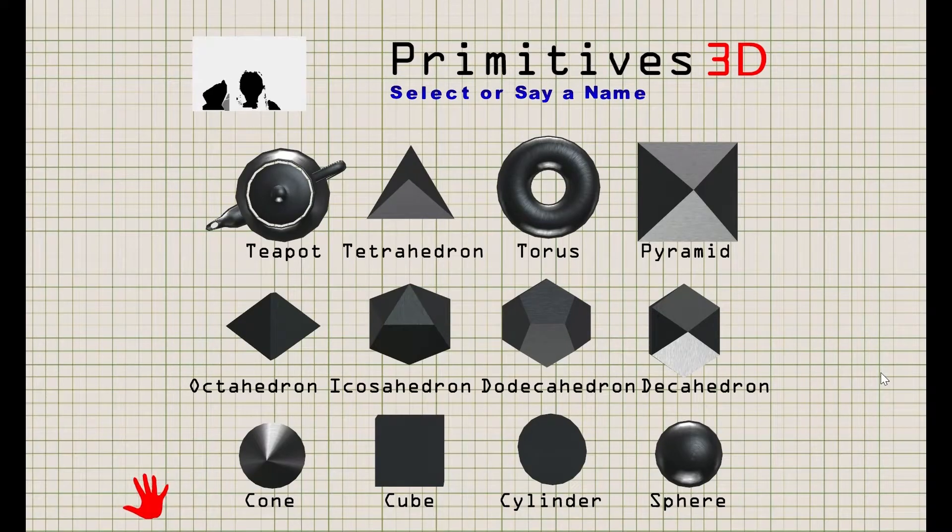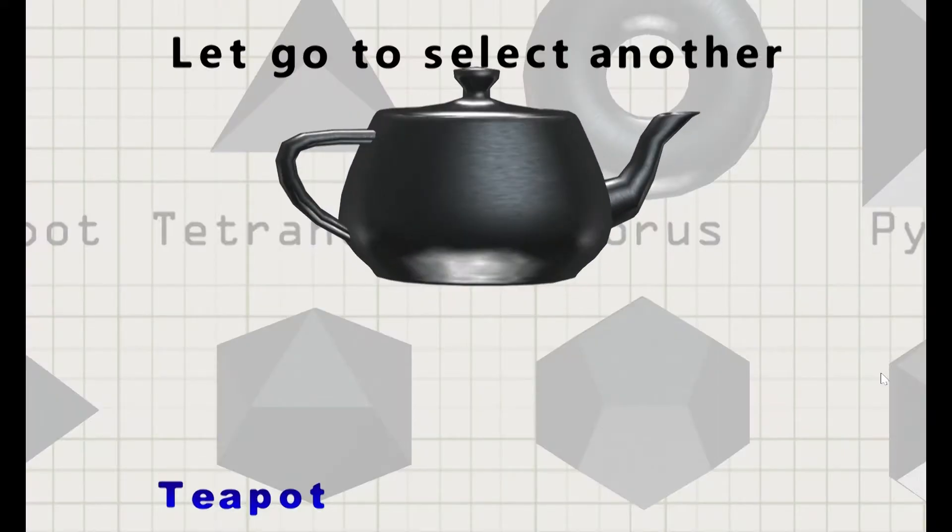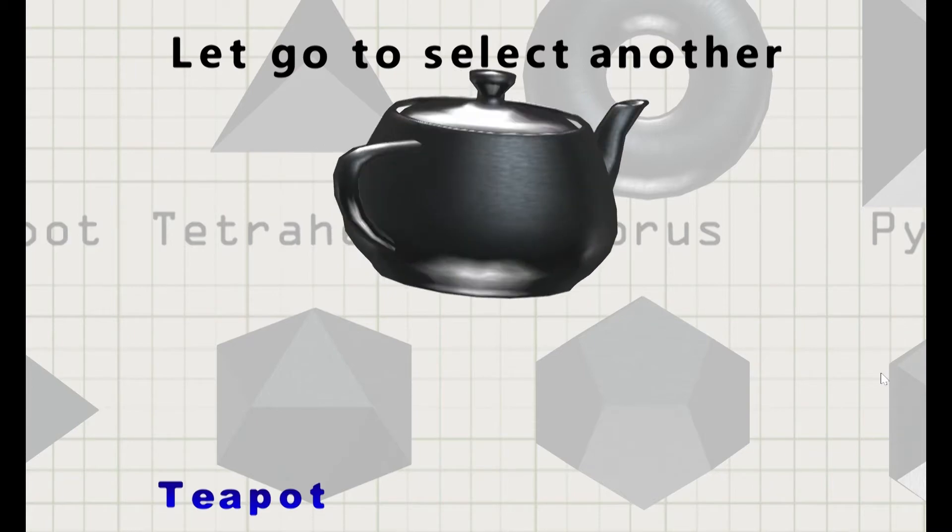Once in close-up mode, you can also speak to rotate X, Y, or Z, or freeze.